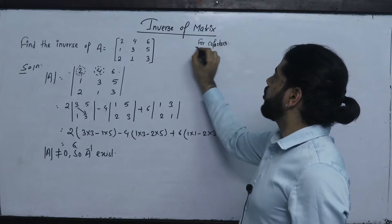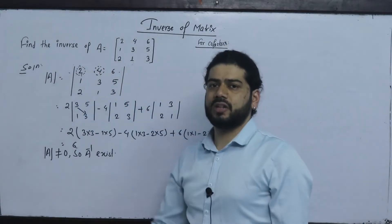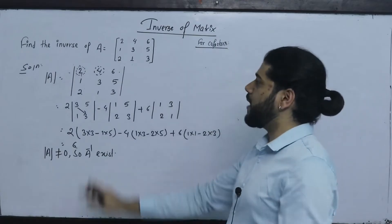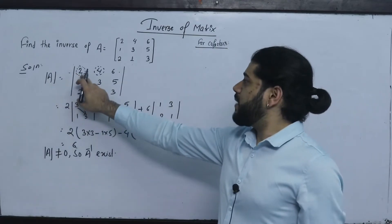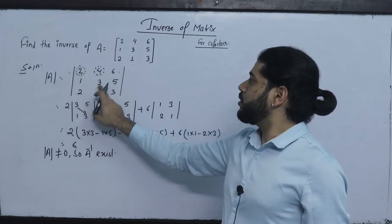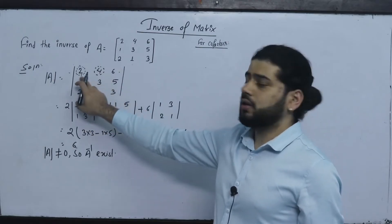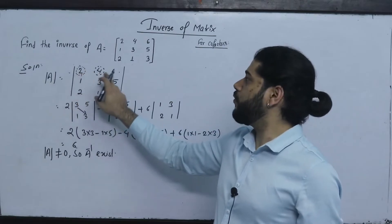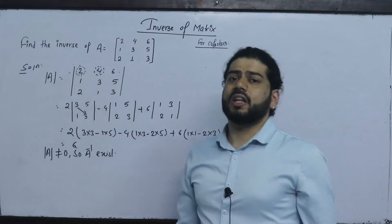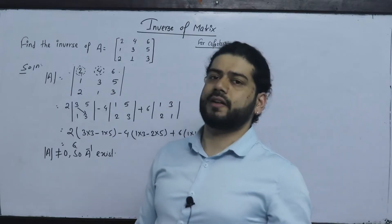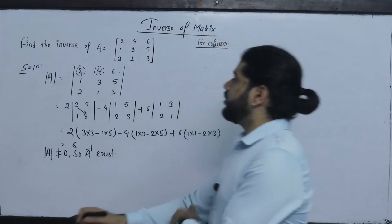To find the inverse, we need the cofactors of the matrix elements. The cofactor value is calculated for each element at position a11, a12, a13, and so on for the matrix [2, 4, 6; 1, 3, 5; 2, 1, 3].